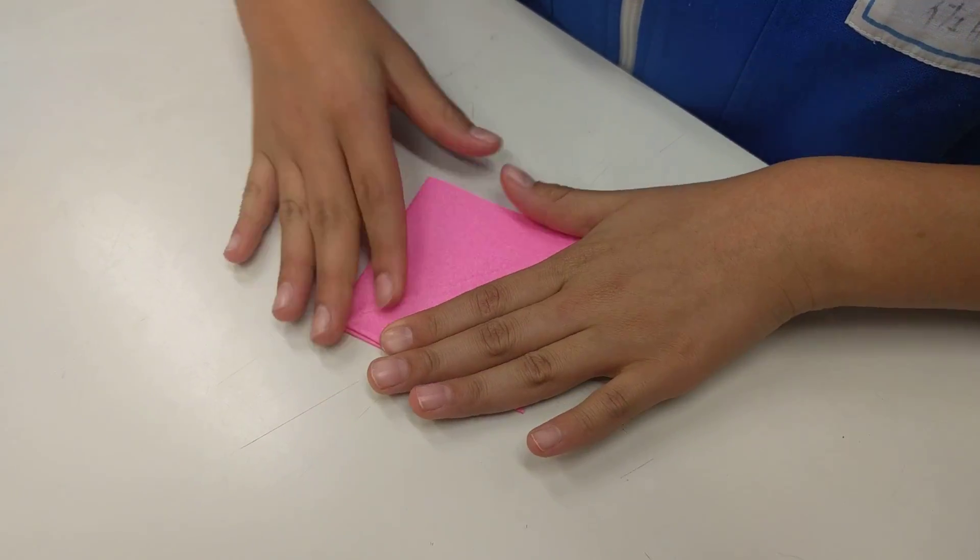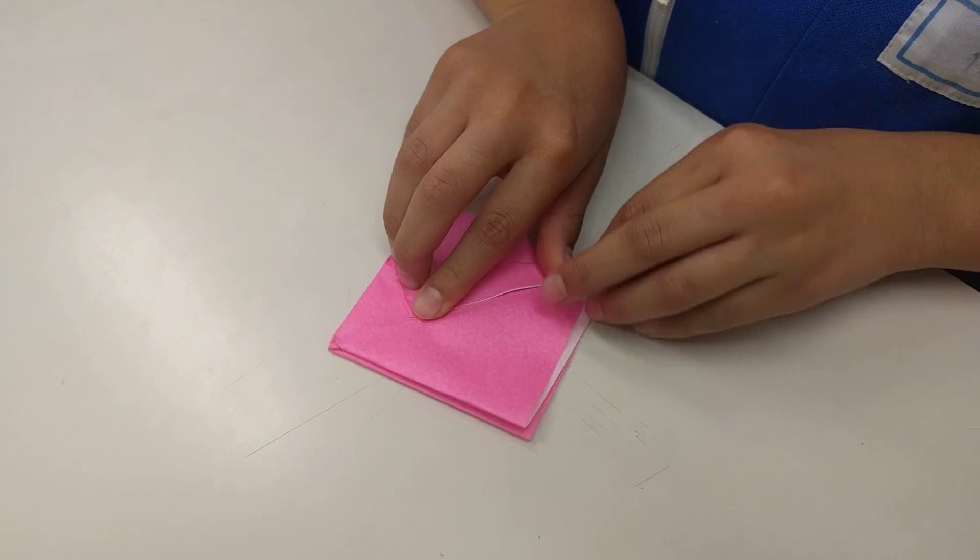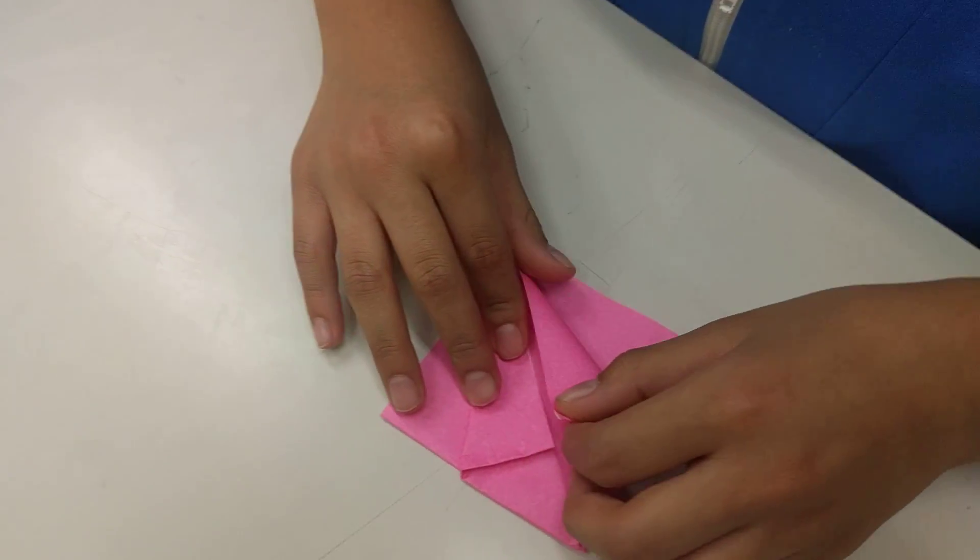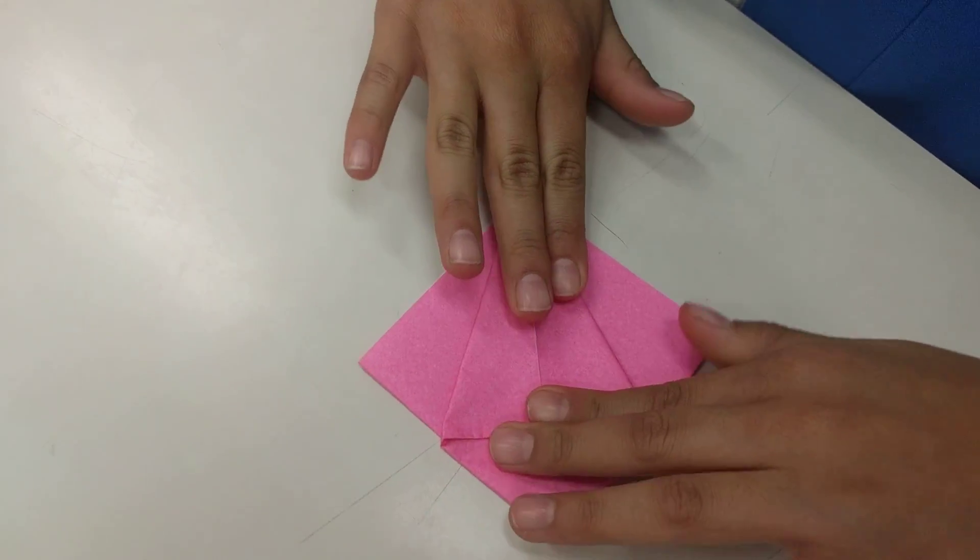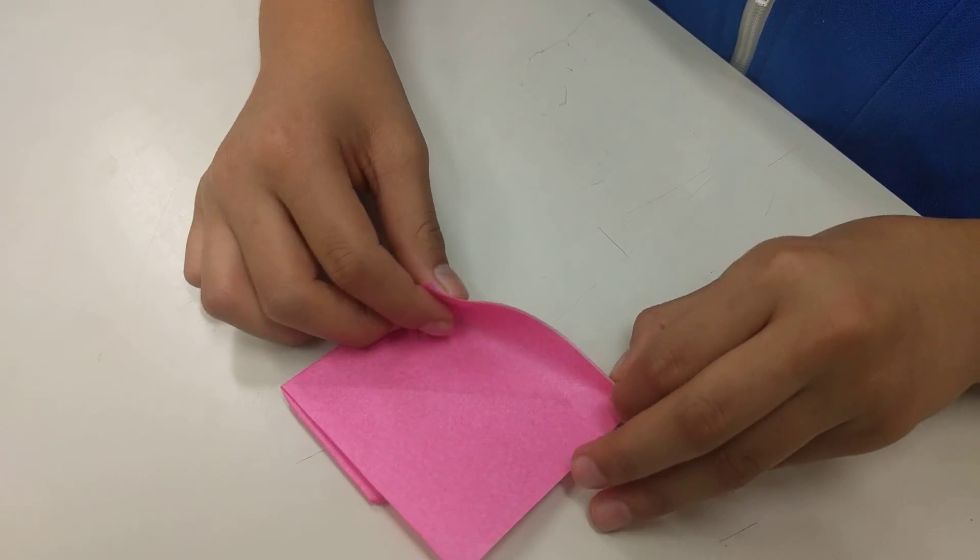Okay. Let me take the edge, fold it up. Two times, make like a kite shape. Flip it over, do the same thing.